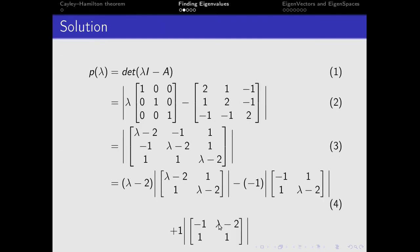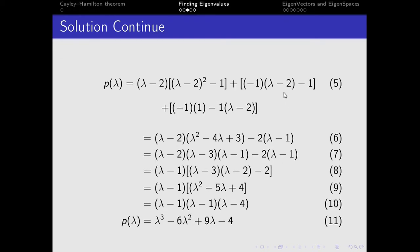From equation 4, we find the determinant of the sub-matrices obtained, giving rise to equation 5. From equation 5, these two terms give us 2 times bracket lambda minus 1, and our first term is written accordingly. We then find the factors of lambda squared minus 4 lambda plus 3, which gives lambda minus 3, and the whole expression can be written as lambda minus 3 times lambda minus 1.